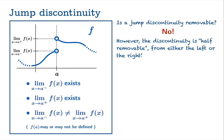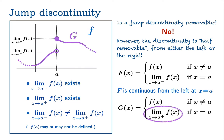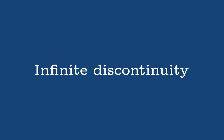However, the discontinuity is half removable from either the left or the right. You could define a new function F, identical to the old function away from the argument a, and since the limiting value as you approach a from the left exists, redefine this new function to have that value at a. Now you've created a function that's continuous from the left at a. But you could play the same game the other direction — define a new function g, identical to the old function away from a, and redefine the function value at a to be the limiting value from the right, thereby obtaining a function that's continuous from the right. So one way to think about a jump discontinuity is it's removable from one side and removable from the other, but not removable overall.